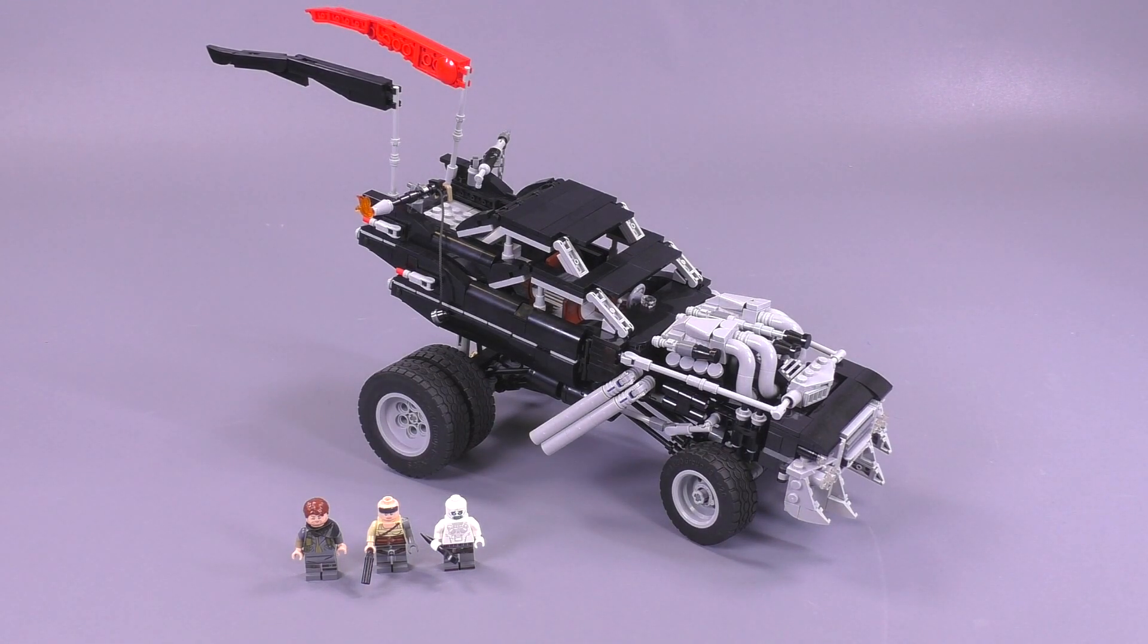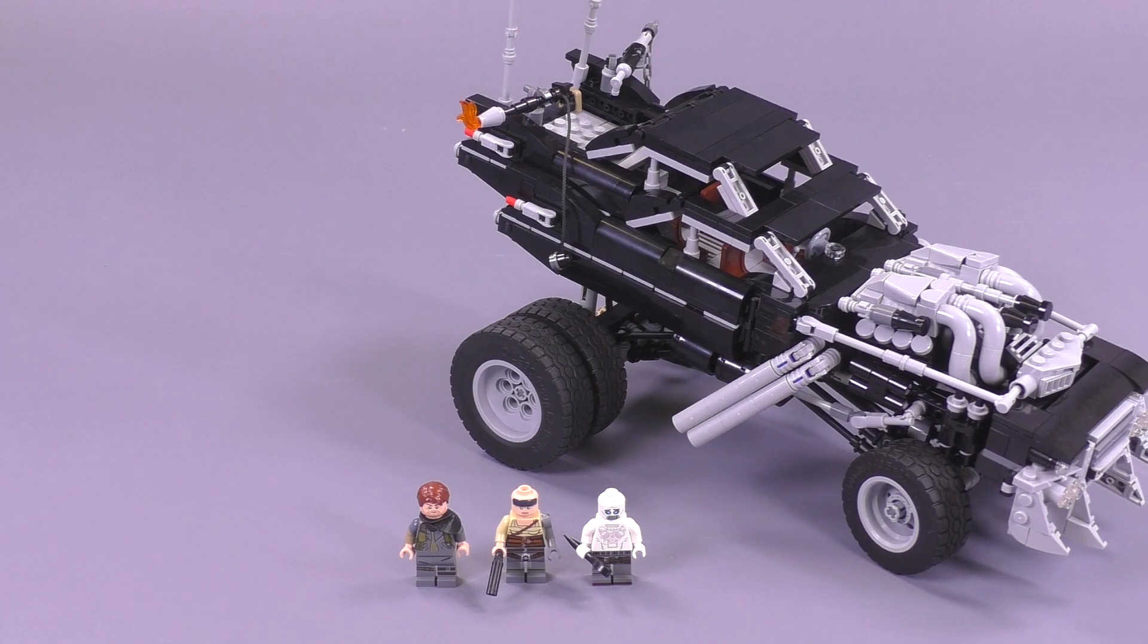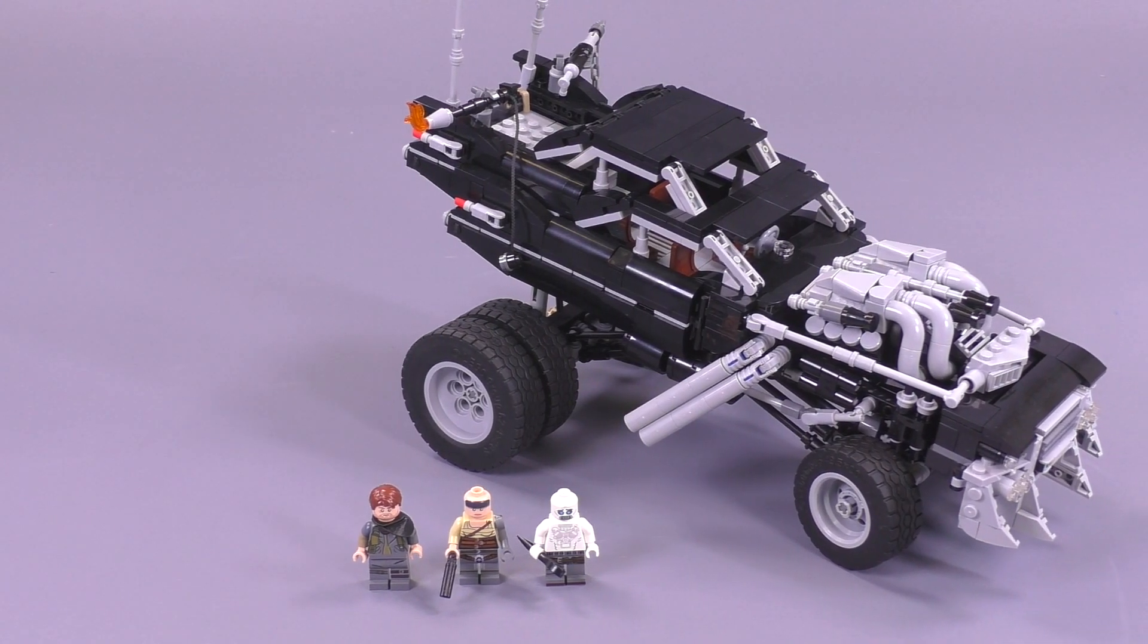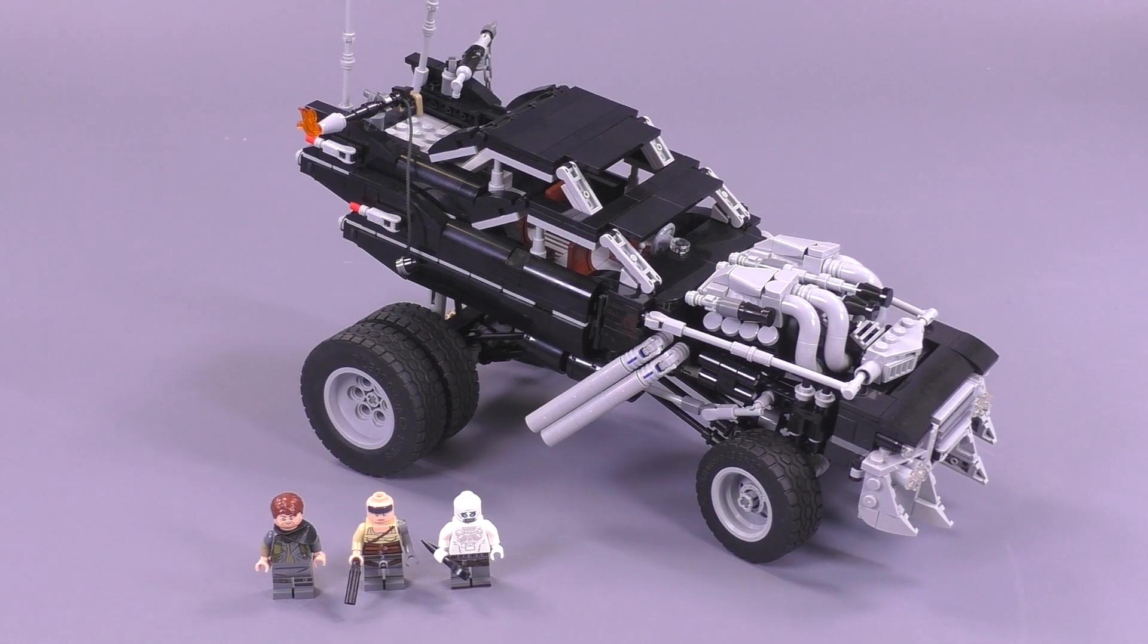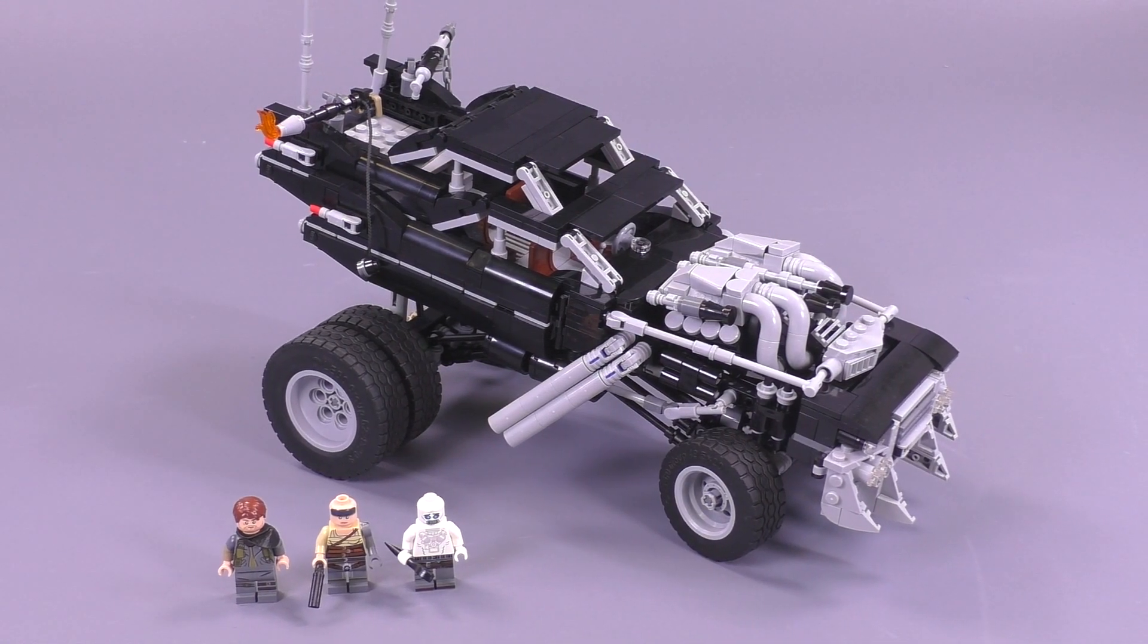Hey everybody, welcome to Brick Vault. Today in front of us I get to show you guys the custom LEGO Gigahorse from Mad Max Fury Road. This vehicle belonged to Immortan Joe, he was the king of his clan.